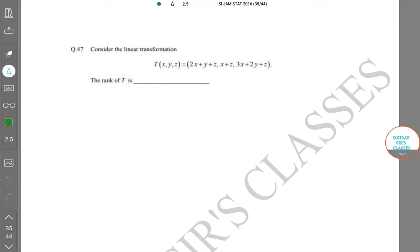Students, welcome to Soros's classes. We are solving IIT JAM Statistics 2016 paper. The question that we have in hand is T(x,y,z) = (2x+y+z, x+z, 3x+2y+z). It's a linear transformation from R³ to R³, and what is the rank of T?